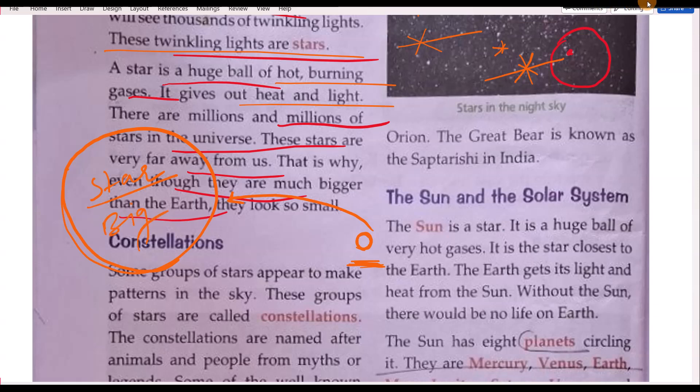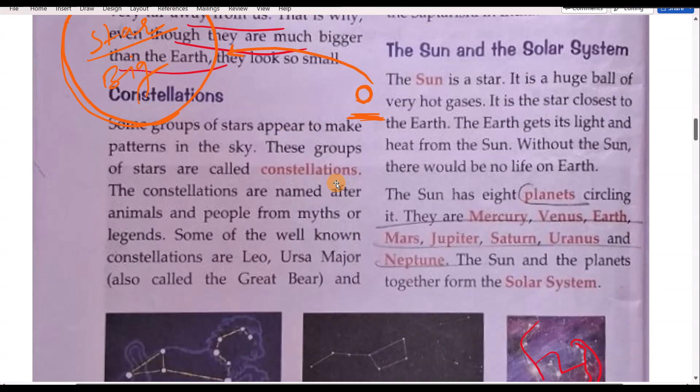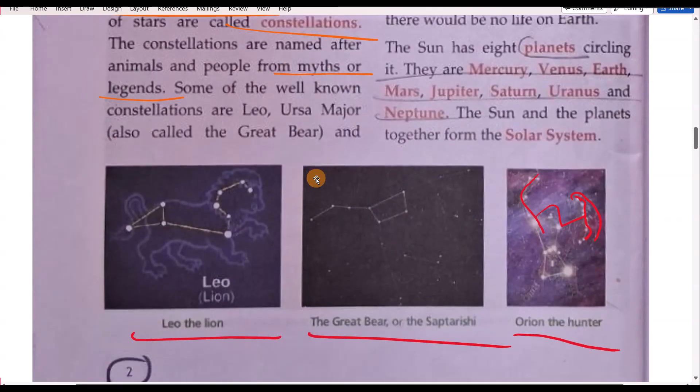Then what is the constellation? Constellation is nothing but a pattern, a pattern in the sky. Some groups of stars appear to make a pattern in the sky. These groups of stars are called constellations. The stars are named after animals, people, from myths and legends. So these stars have names. Like example, here are given some examples.